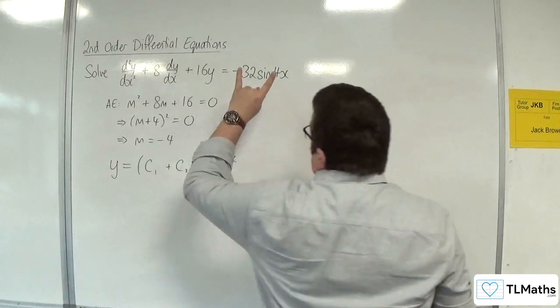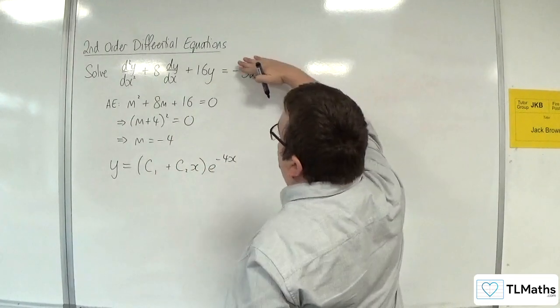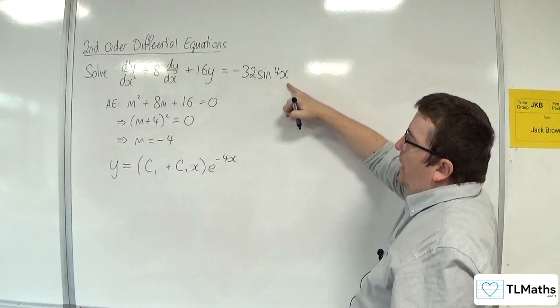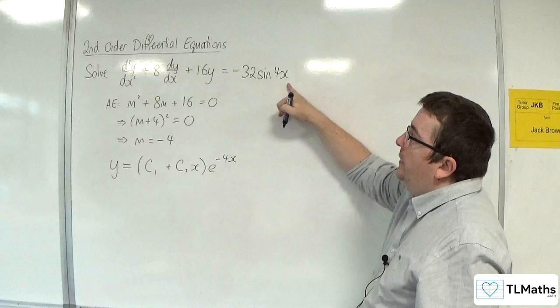Right, now that solves the homogeneous case. Now we've got to look at the right hand side and we've got to suggest a trial function for this.